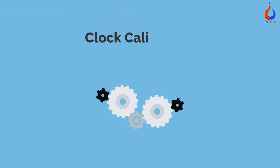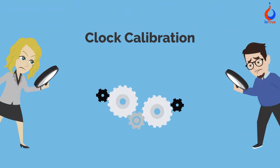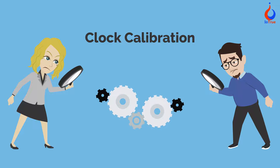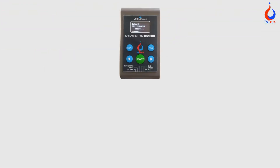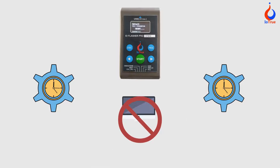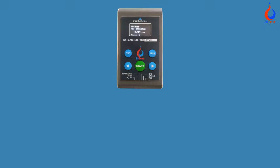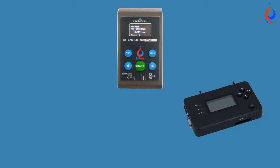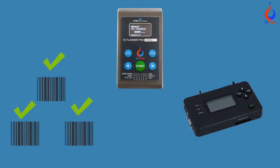Clock calibration has always been a hassle for the production house. IO Flasher supports multiple ways of calibrating the clock without any external tool. IO Flasher can also be used as a low-cost gang programmer while maintaining serial number uniqueness for each product.